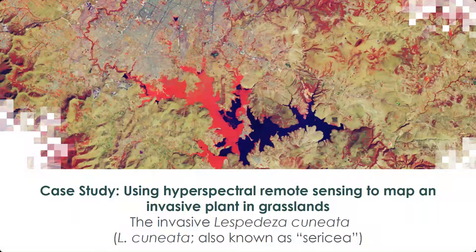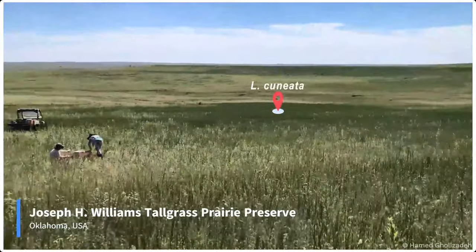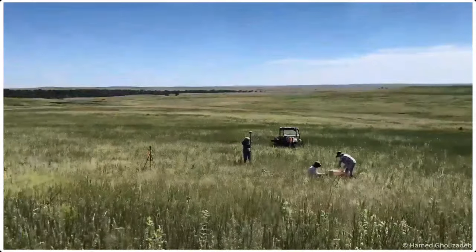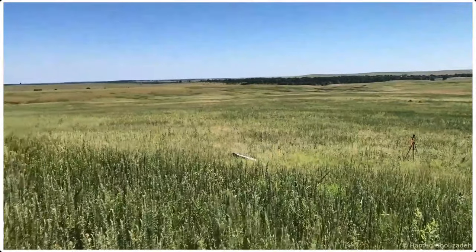I'm now going to present our case study where we used hyperspectral remote sensing to map an invasive plant in grassland ecosystems. The name of this plant is Lespedeza cuneata — its common names include sericea or Chinese bush clover. To give you an idea how this plant looks, I'm going to show a very short video. Here you can see a tall dense stand of Lespedeza cuneata, and here is another example at the bottom left of this slide.